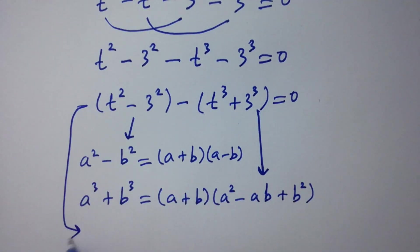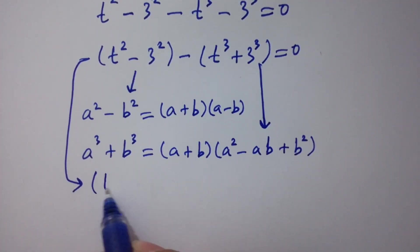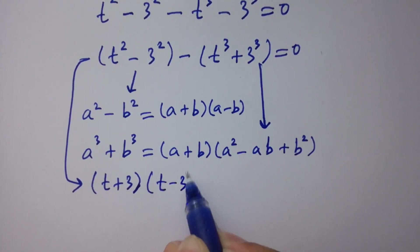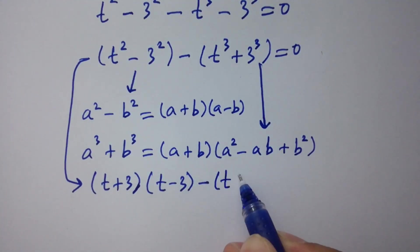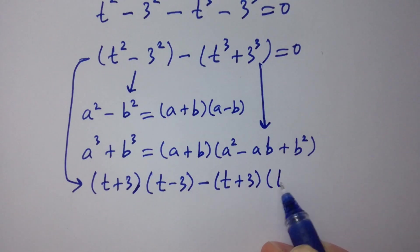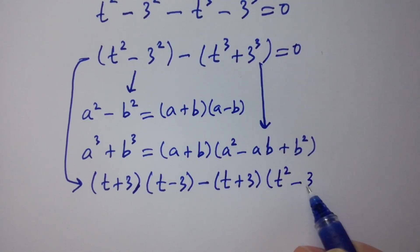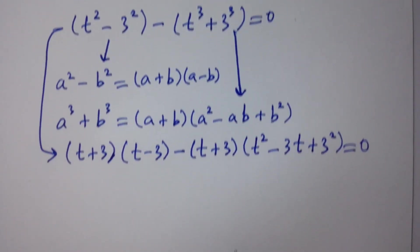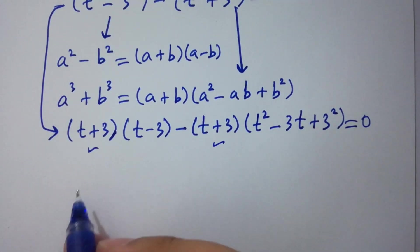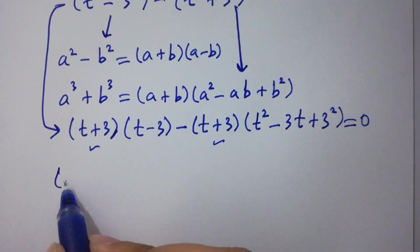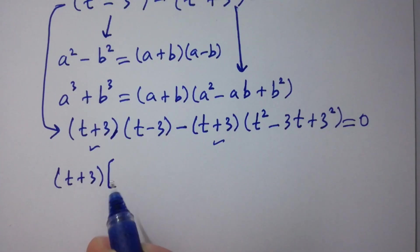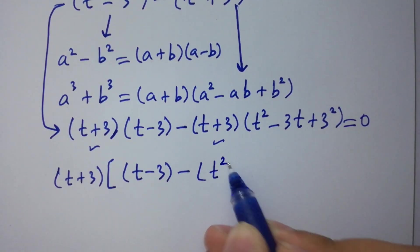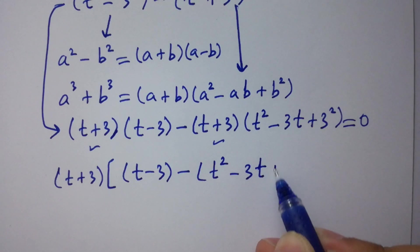Applying these formulas: t-squared minus 3-squared gives t plus 3 times t minus 3. And t-cubed plus 3-cubed gives t plus 3 times t-squared minus 3t plus 3-squared. Simplifying: t-squared minus 3t plus 9, equal to 0.